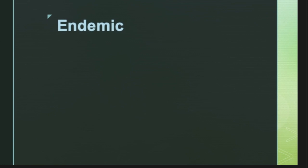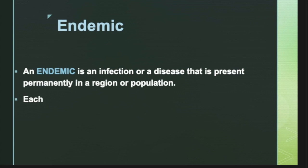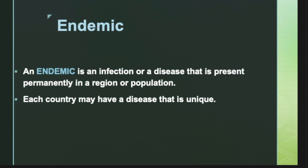Let us start with what is an endemic. An endemic is an infection or a disease that is permanently present in a region, and each country may have a disease that is unique to its population. Whenever a disease is present constantly among a large number of people it can be called an endemic. For example, diseases like malaria and chickenpox, despite the presence of vaccines, still exist and there are some number of cases registered every year across the countries.